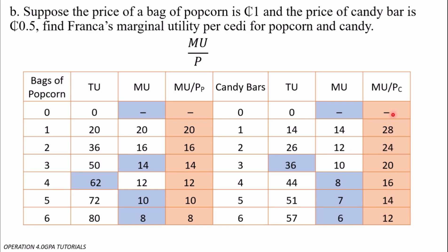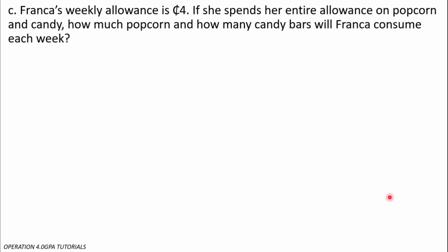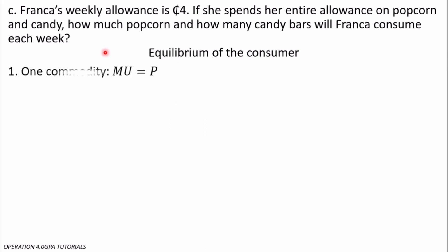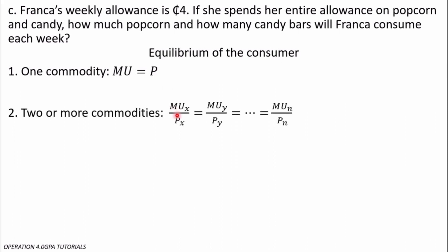The next question says: Franca's weekly allowance is 4 cedis. If she spends her entire allowance on popcorn and candy, how much popcorn and how many candy bars will Franca consume each week? For this we need the equilibrium condition of the consumer consuming two goods. In consuming two or more commodities, the equilibrium condition is: marginal utility of good X over price of X should equal marginal utility of good Y over price of Y, and so on for all goods consumed.